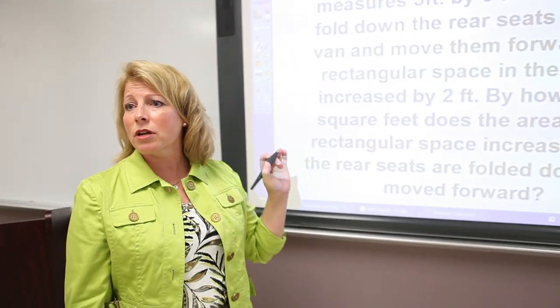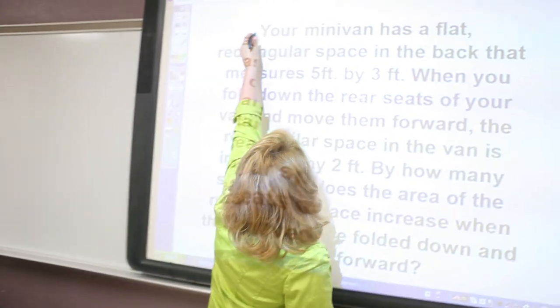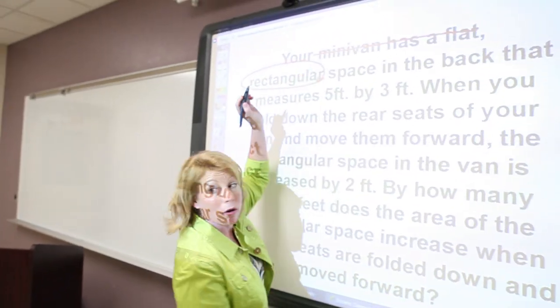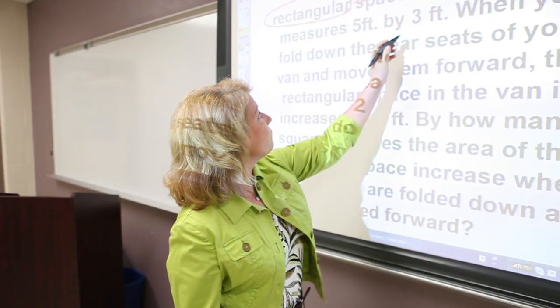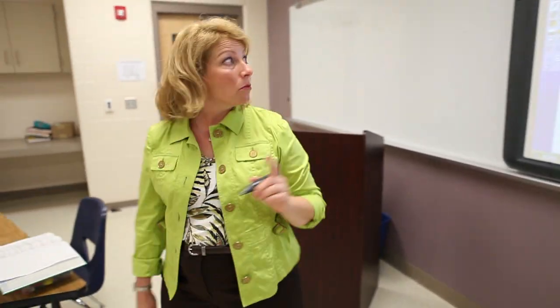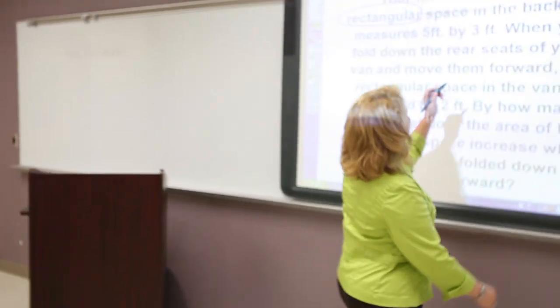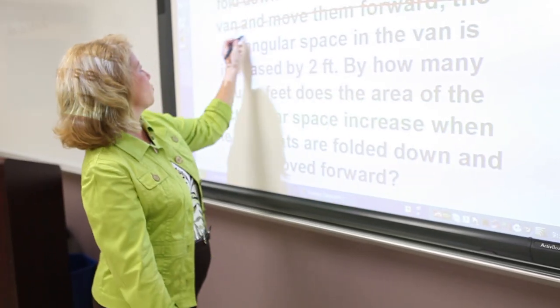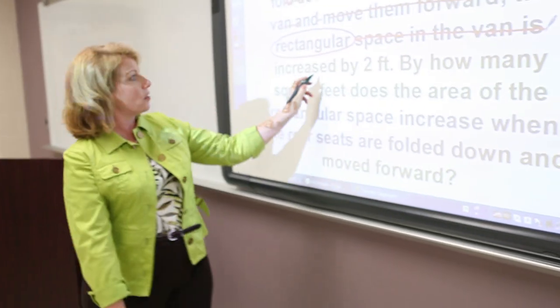I'm going to cross out the stuff we don't need. We don't need to know it's a minivan or that the back is flat. We do need to know that it's rectangular and that it measures five feet by three feet. Now for the second sentence: When you fold down the rear seats and move them forward, the rectangular space is increased by two feet. What's necessary there? Student: We need to know that it increased by two feet. We still know it's rectangular, and now we know it's increased by two feet.